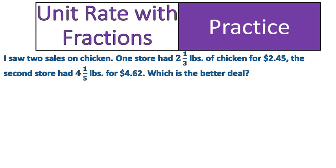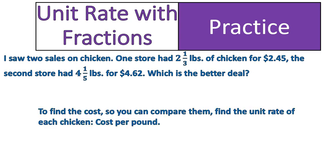In this final question, this is a practice for you to try. Use unit rates to figure out which is the better deal. One store had two and one third pounds of chicken for $2.45. The second store had four and a fifth pounds for $4.62. Which is the better deal? Remember, you are looking for unit rate — find the cost per pound for each and compare. Pause the video and try this one out on your own.